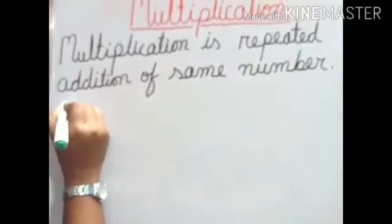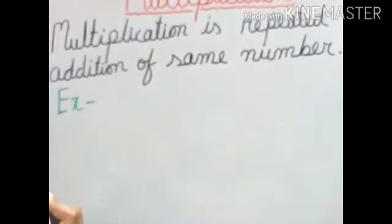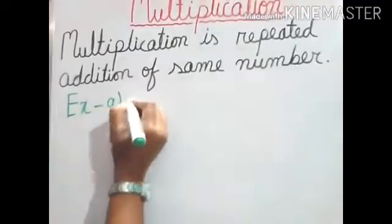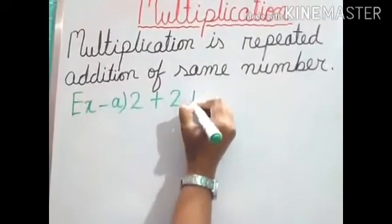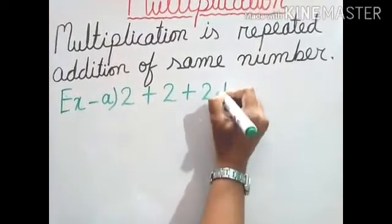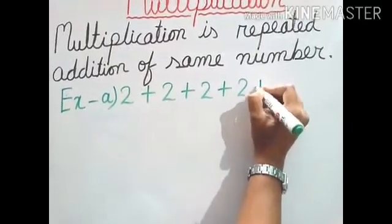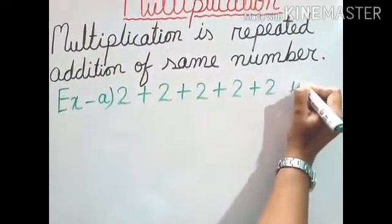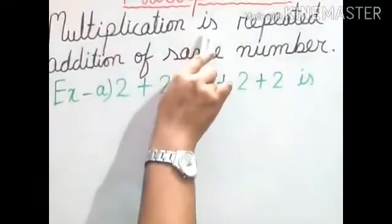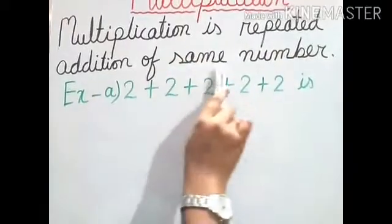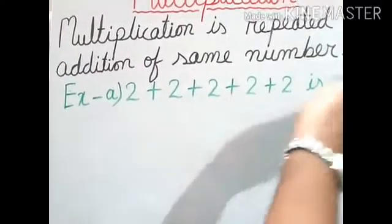So the examples are. For number A: 2 plus 2 plus 2 plus 2 plus 2. Just now I said multiplication is repeated addition of the same number — same number addition. So we can write this one as a multiplication.